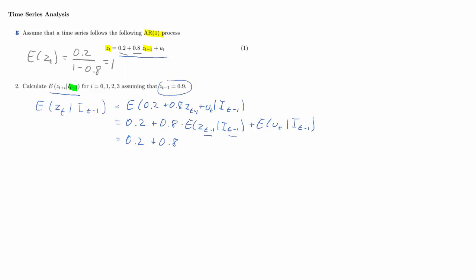The expectation of Zt minus 1 at time T minus 1: at time T minus 1 we know what Zt minus 1 is — that's 0.9. The expected value of ut given information at T minus 1 is a random term, so its expected value is 0. All together, we get a value of 0.92. So the conditional expectation of Zt given information at time T minus 1 is 0.92.